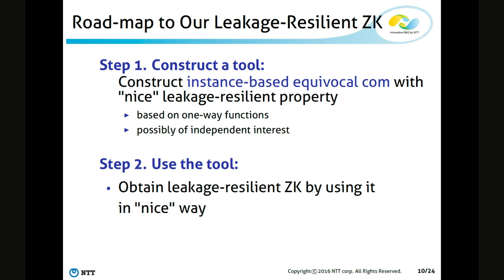I construct the leakage resilient zero knowledge protocol in the following two steps. In the first step, I construct a main tool: a new instance-based equivocal commitment that satisfies not only equivocality but also a nice leakage resilient property. I construct such a commitment by using a rewired function. Then in the second step, I use this instance-based equivocal commitment to construct a leakage resilient zero knowledge protocol. Let me first explain the first step.